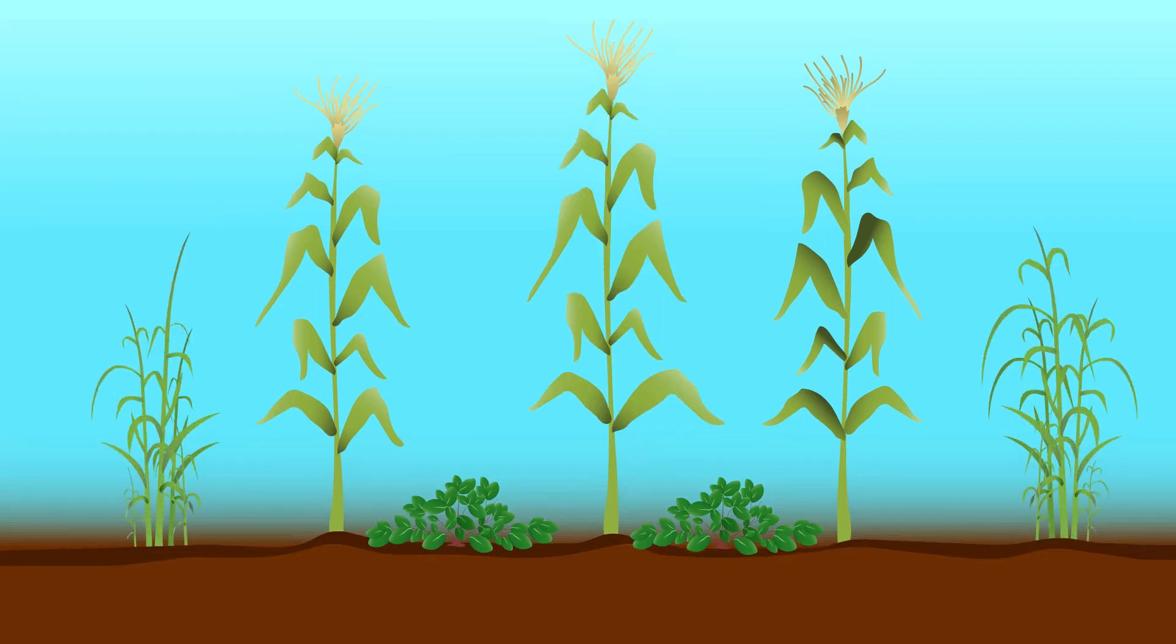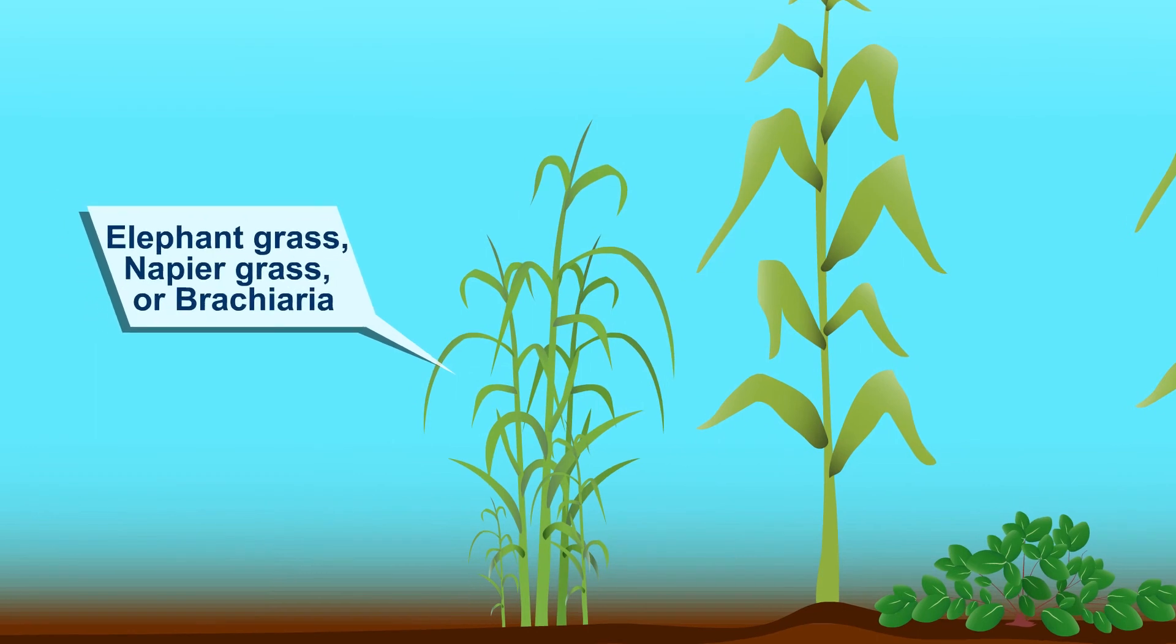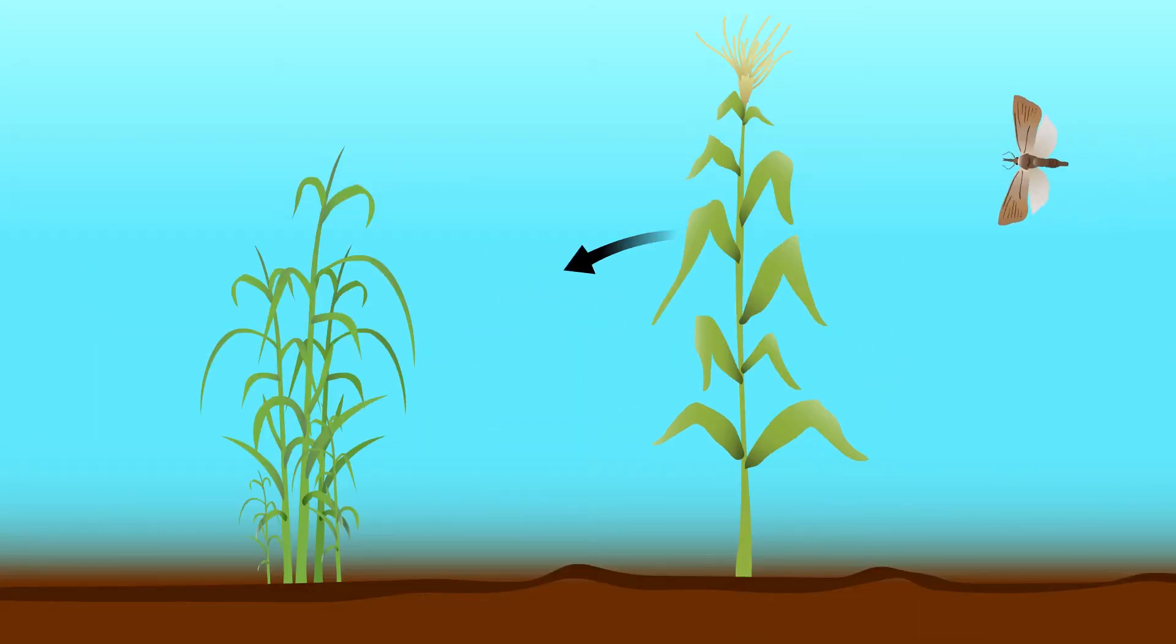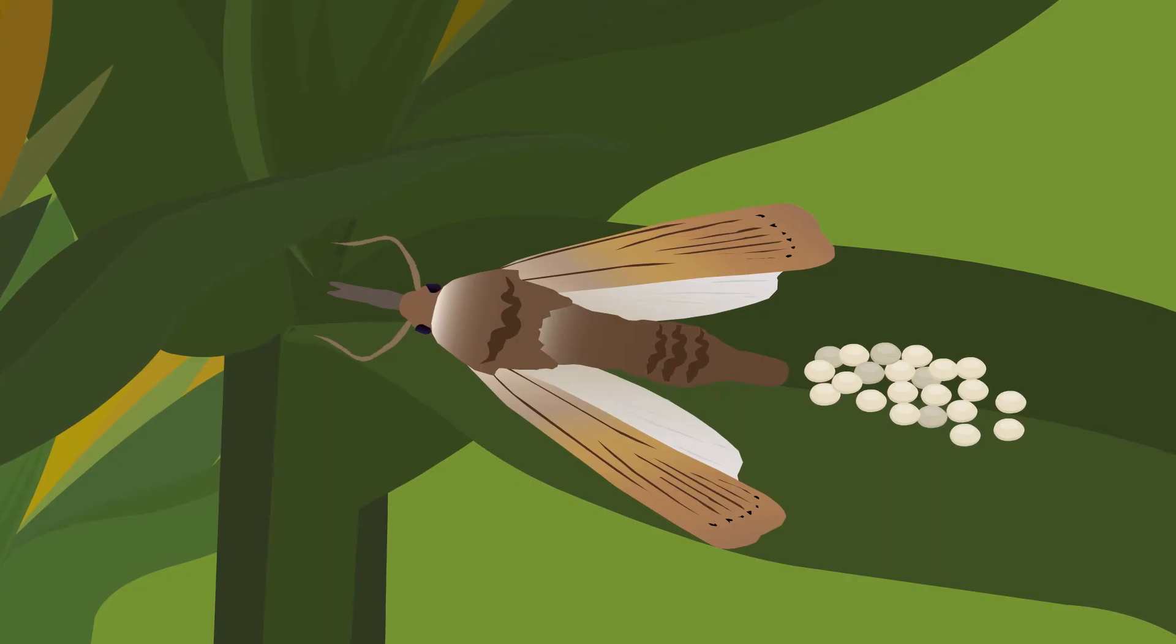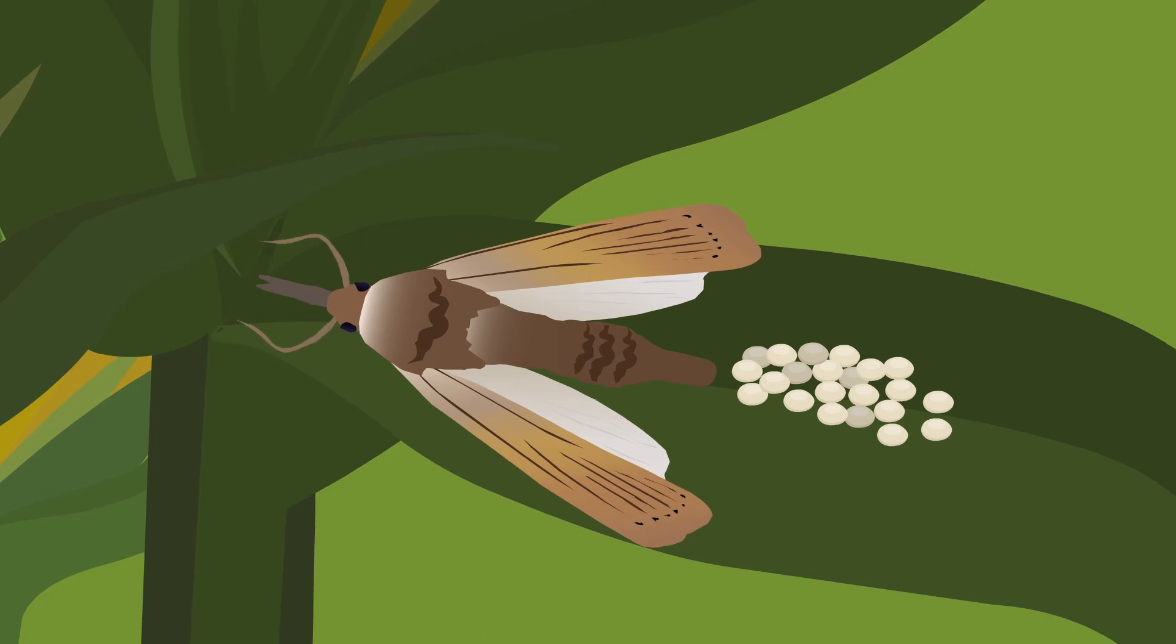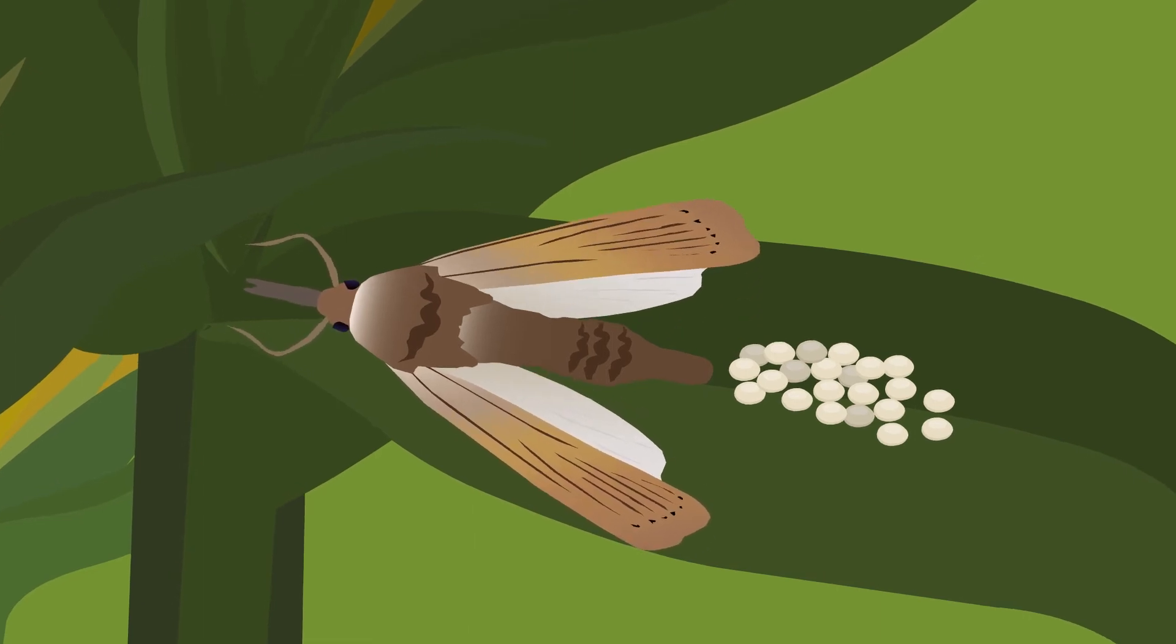On the outside of your maize field, plant elephant grass, also known as napier grass, or brachiaria. These grasses will attract or pull the moths out of the maize. Instead of laying eggs on your maize plants, moths will want to lay eggs on this grass.